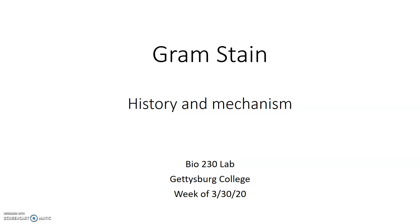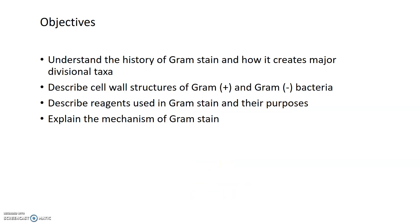This is the first half of a lecture on gram staining, which is one of the most important and useful techniques in microbiology to begin identifying microorganisms. The objectives of this lecture are to talk about the history of gram staining, give a refresher on cell wall structures and the differences between gram positive and gram negative bacterial cell walls, and then talk about the mechanism of gram staining as well as the reagents used and how they can differentiate between gram positive and gram negative bacteria.